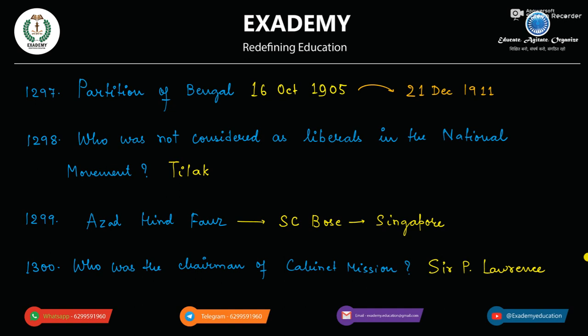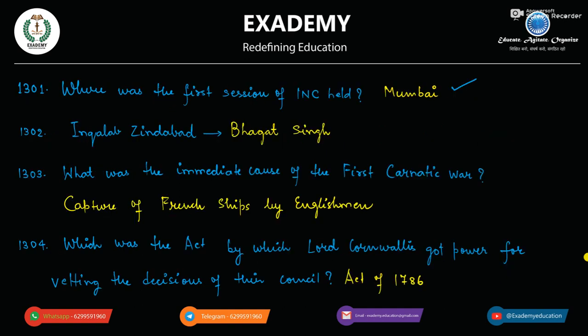Who was the chairman of the Cabinet Mission? Cabinet Mission ka chairman Sir P. Lawrence tha. Where was the first session of Indian National Congress held? 1885 mein Mumbai mein.